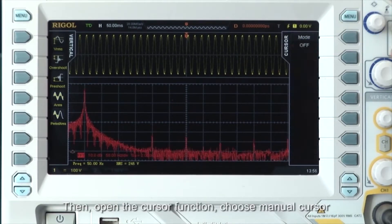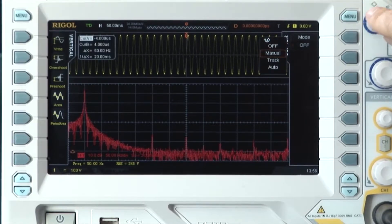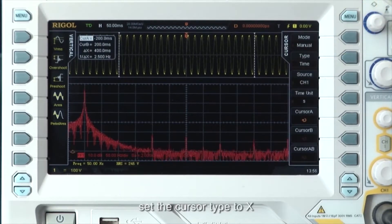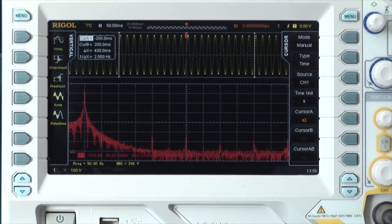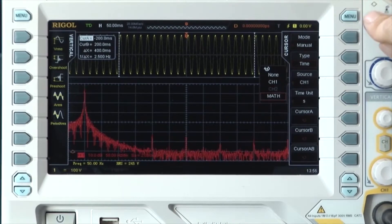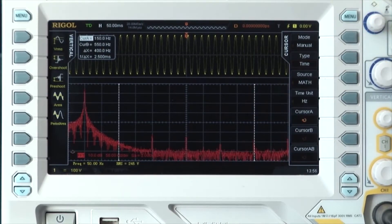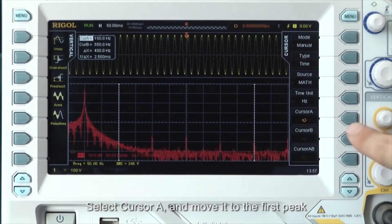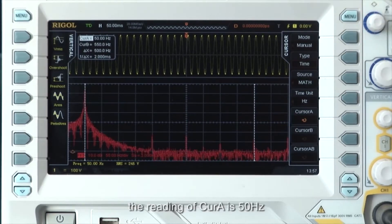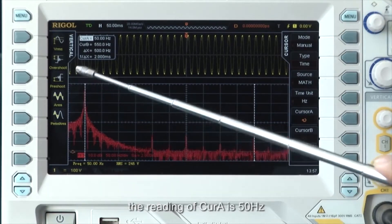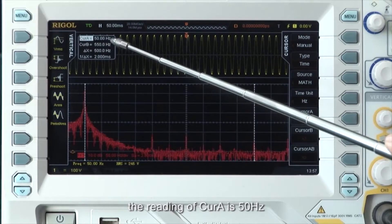Then open the cursor function. Choose manual cursor. Set the cursor type to x and set the source to math. Select cursor A and move it to the first peak. The reading of cursor A is 50 hertz, the fundamental frequency of the AC line.